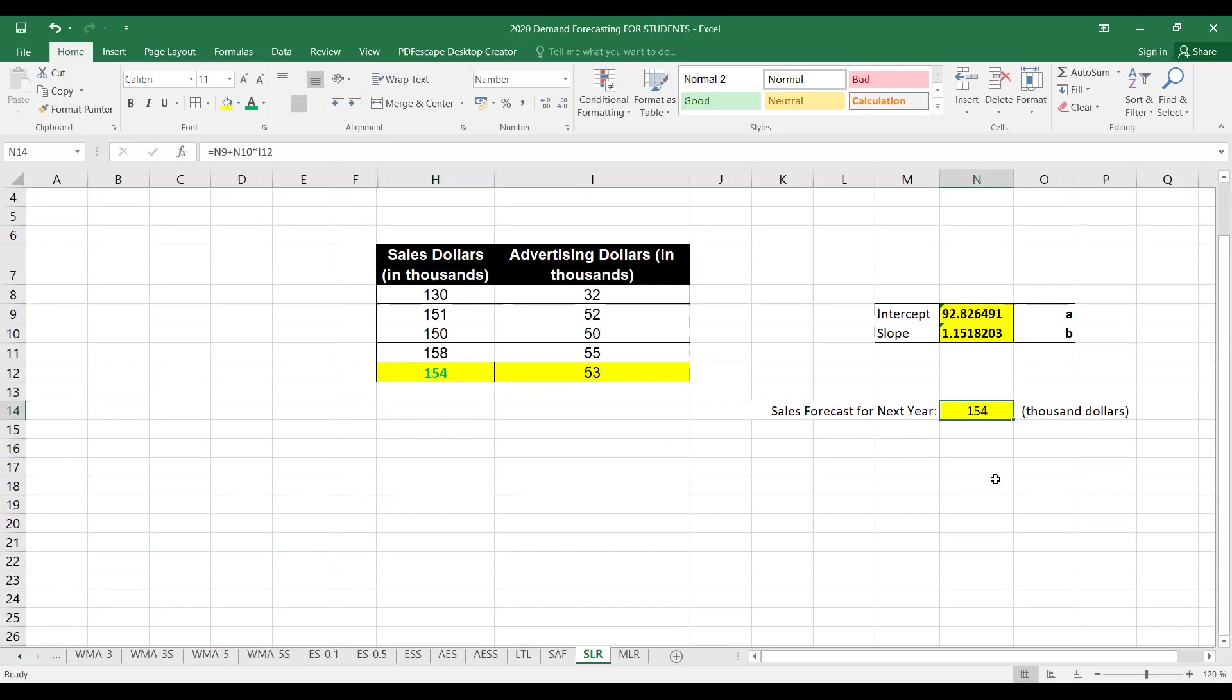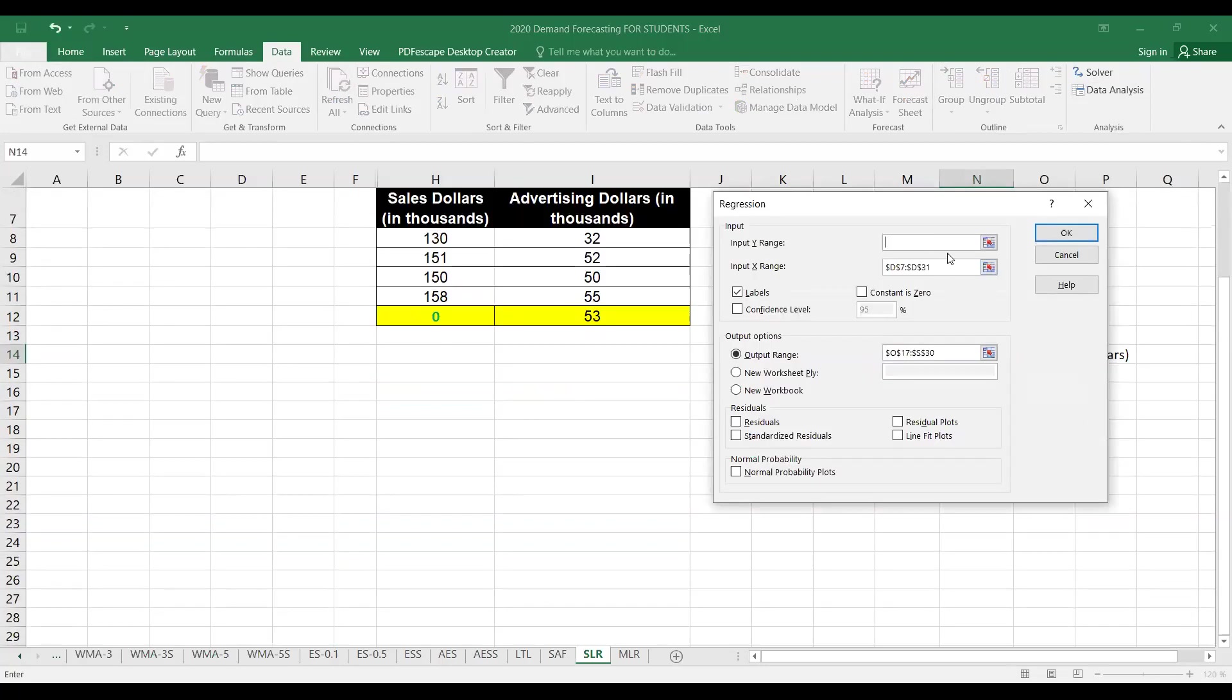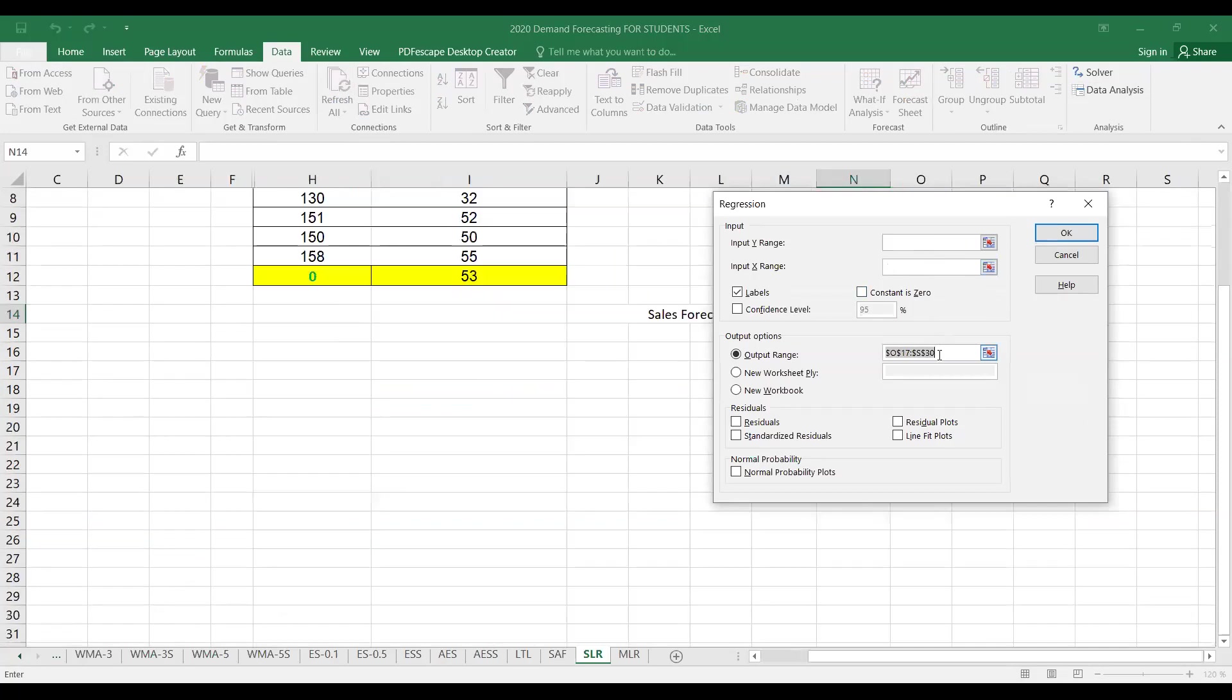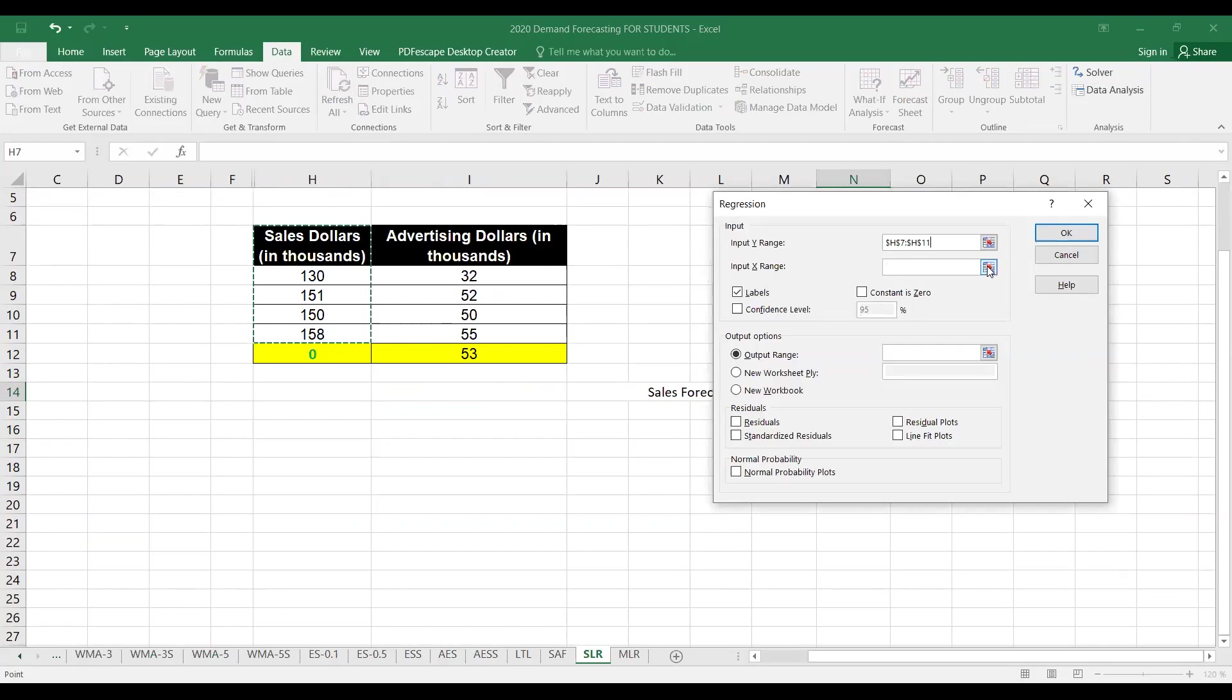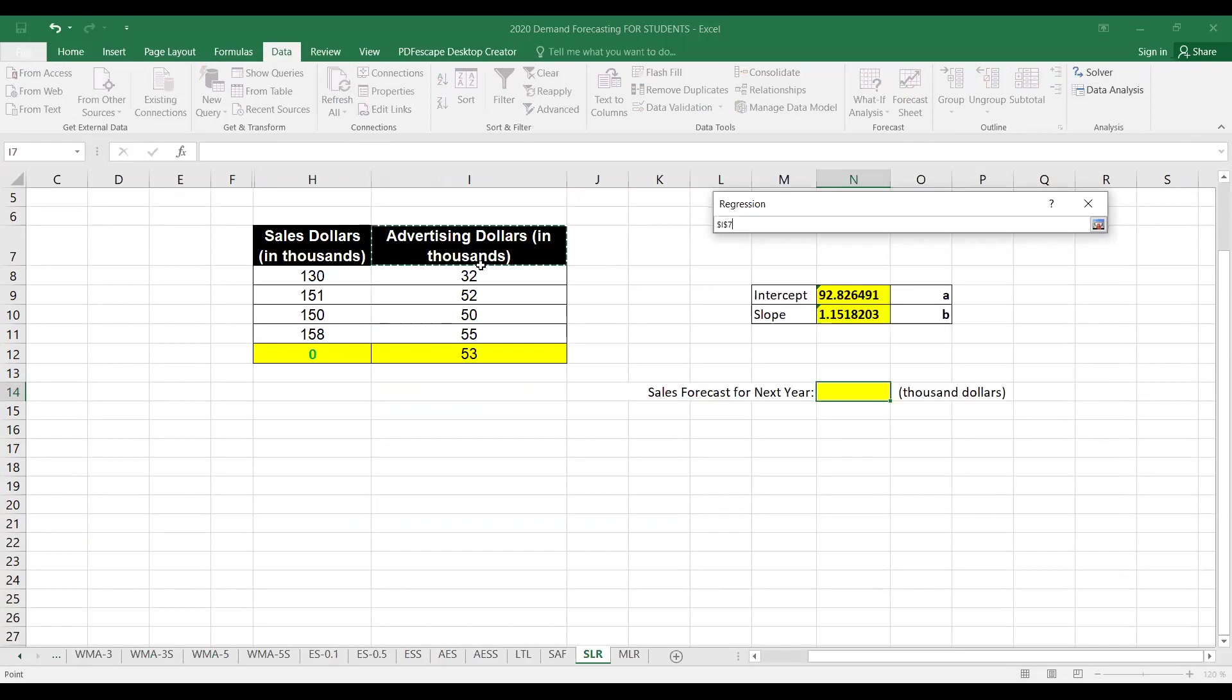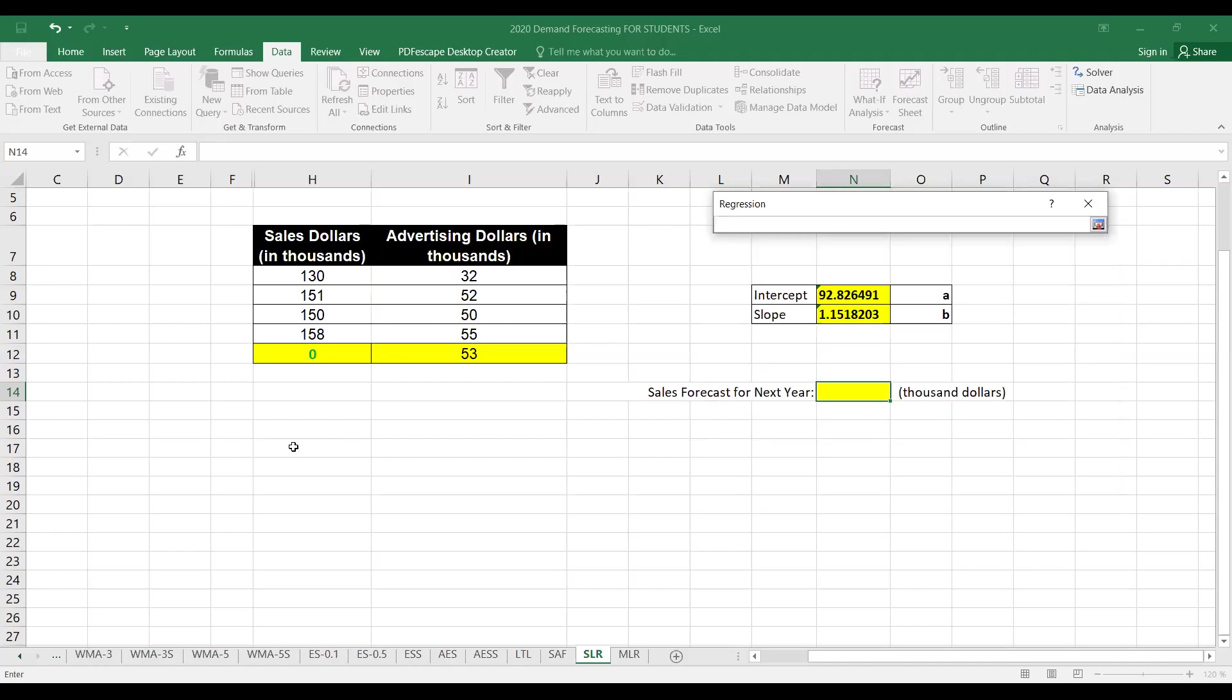There is another way to do that as well. We can use the data tab and data analysis regression. Here we can select input Y range and input X range. Input Y range is these values of sales, X range is the amount spent. We can select the output range.